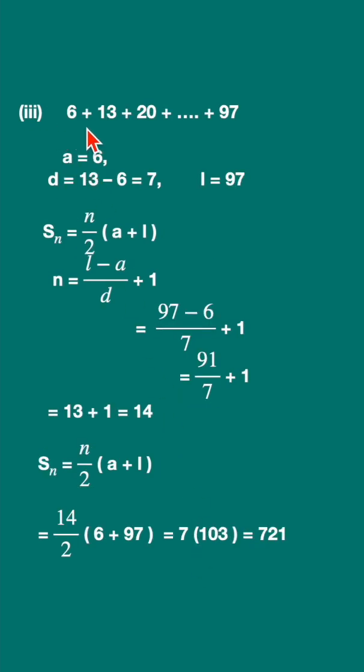Third sum: this also is an arithmetic progression. We are going to apply the formula for arithmetic series S_n. Here we are given the last term, which is called L. The common difference is 13 minus 6, that is 7.